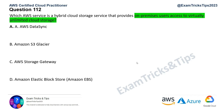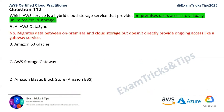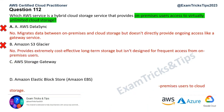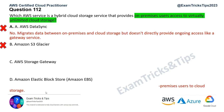Option B, AWS Glacier, is a long-term cost-effective deep-freezing solution for data you don't need to access frequently — not an on-prem to cloud storage solution. Option D, Amazon Elastic Block Store, offers block-level storage for EC2 instances but doesn't directly connect on-premises users to cloud storage. Both are incorrect.